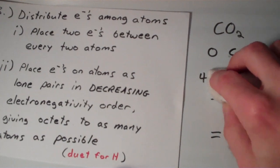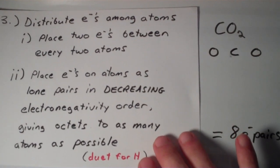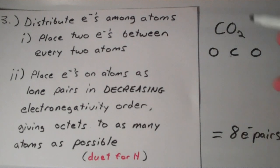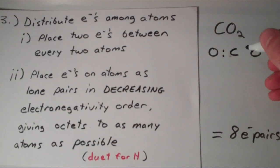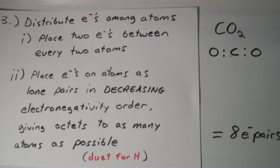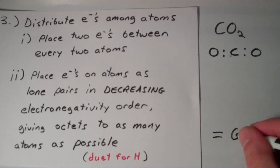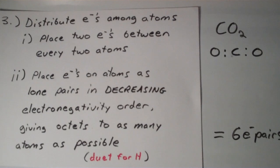So in the case of CO2, the first step that we're going to do is we're going to place 2 electrons between these 2 and between these 2. So in doing so, we've just used up 2 of our 8 electron pairs, so now we have 6 remaining electron pairs that are going to be distributed to the molecule in some other way.